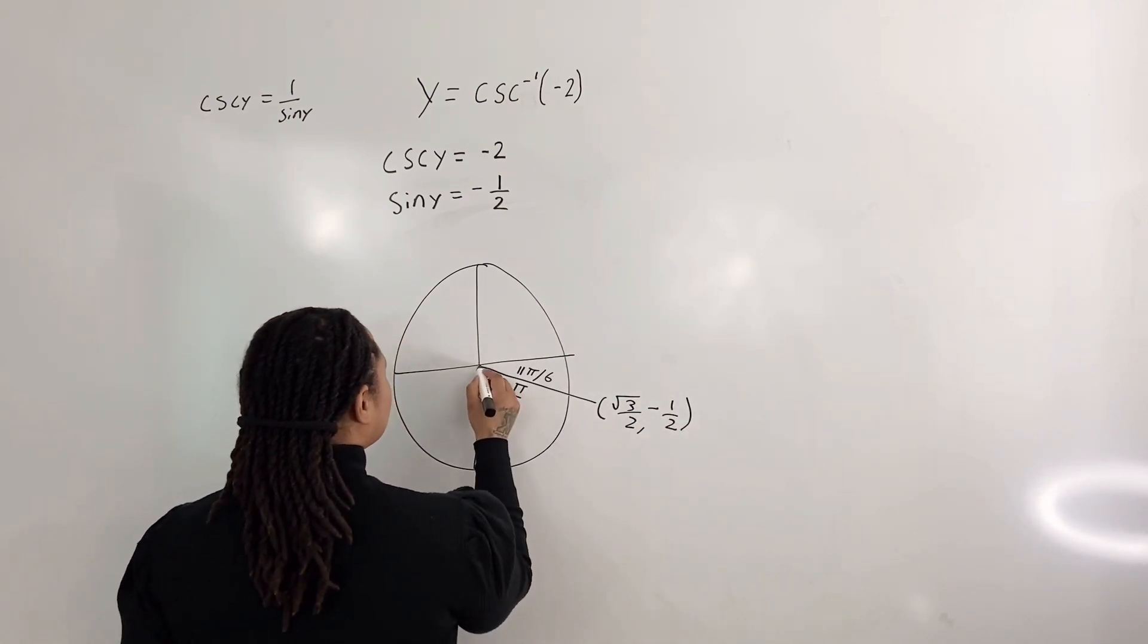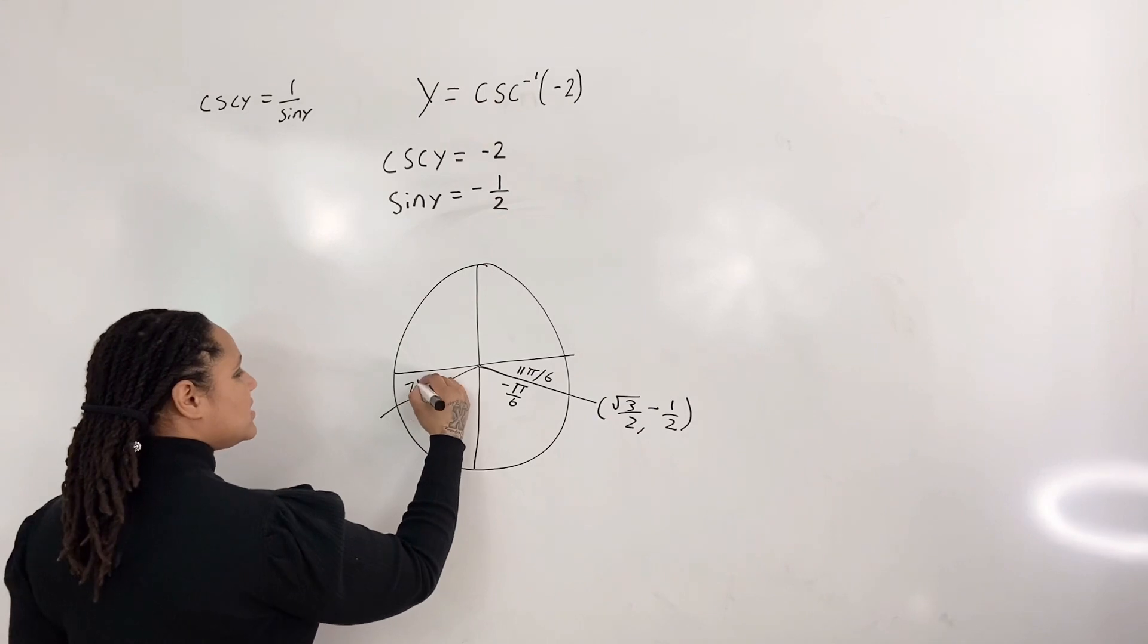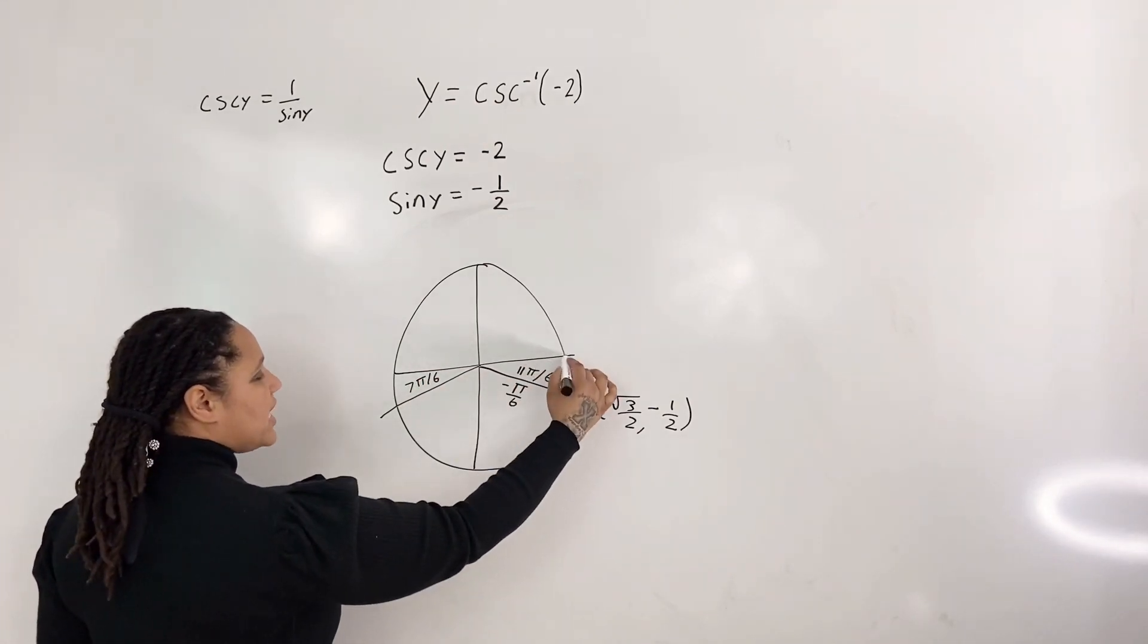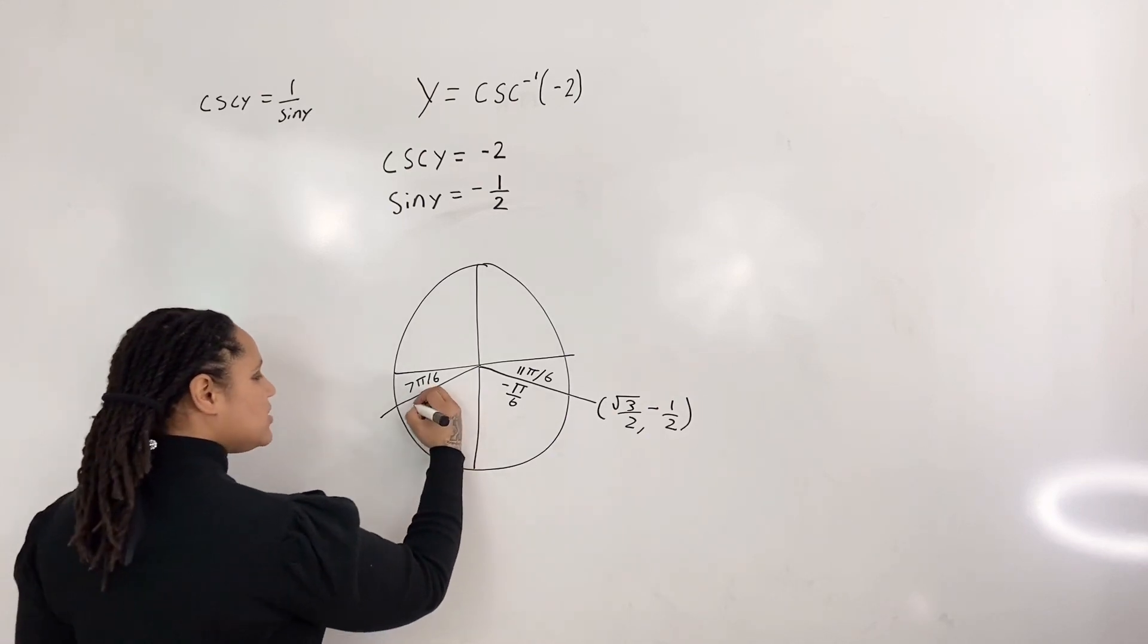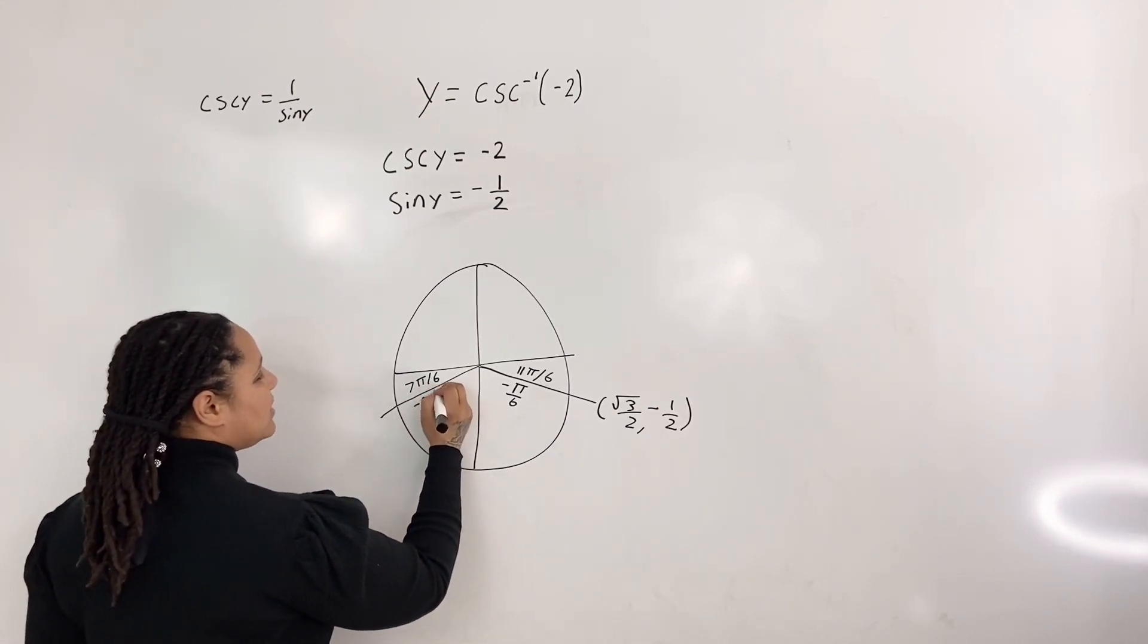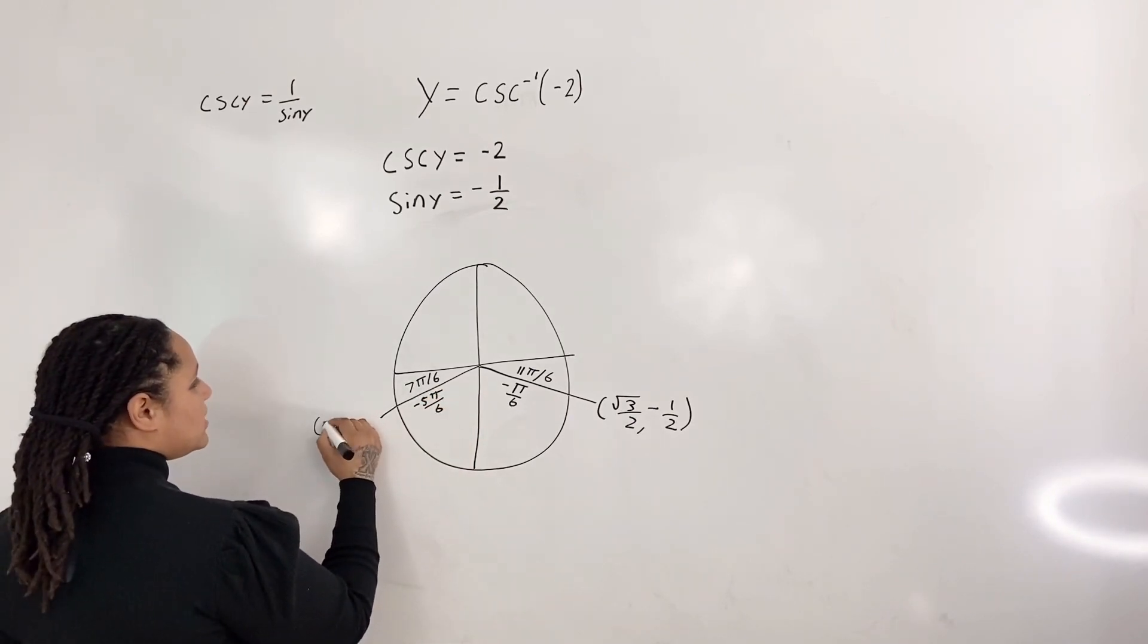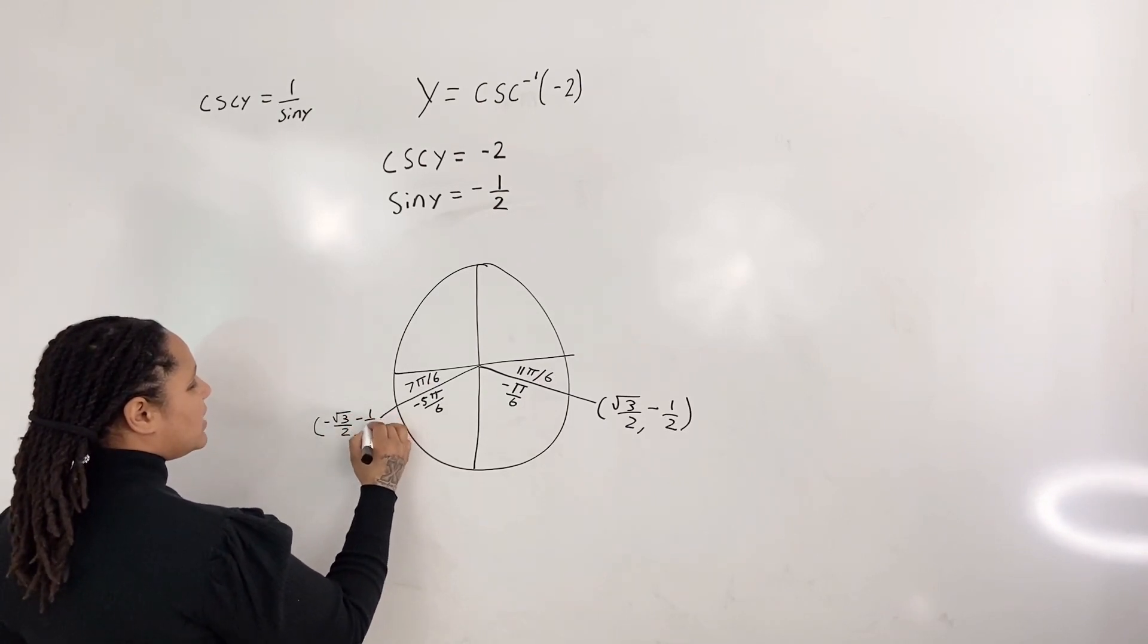And we also know that at 7 pi over 6, we can also call this location, if we go into the negative direction, it's also negative 5 pi over 6. And our terminal points are negative root 3 over 2, negative 1 half.